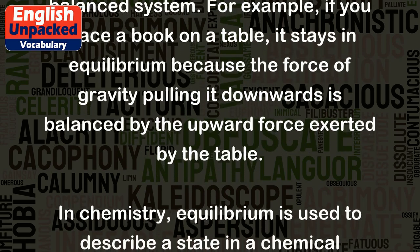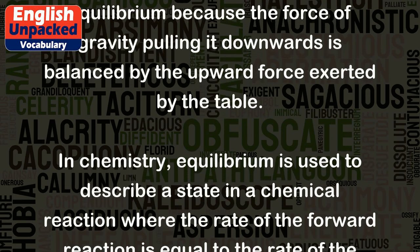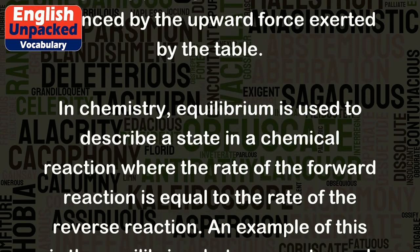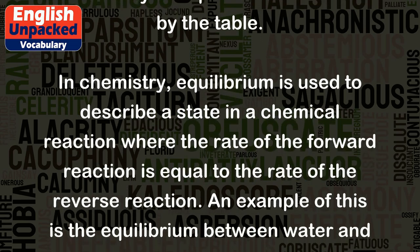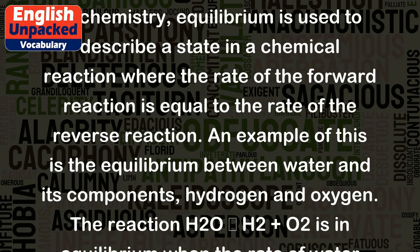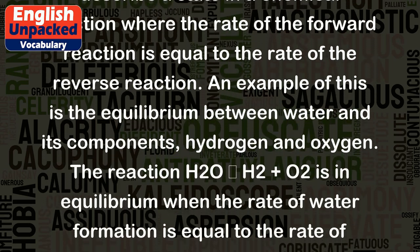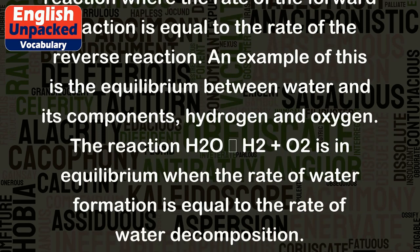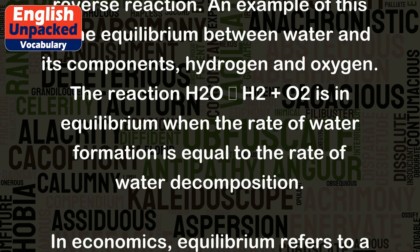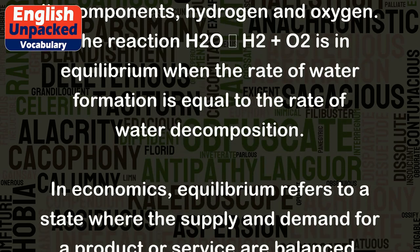In chemistry, equilibrium is used to describe a state in a chemical reaction where the rate of the forward reaction is equal to the rate of the reverse reaction. An example of this is the equilibrium between water and its components, hydrogen and oxygen. The reaction H2O ⇌ H2 + O2 is in equilibrium when the rate of water formation is equal to the rate of water decomposition.